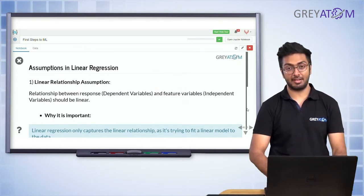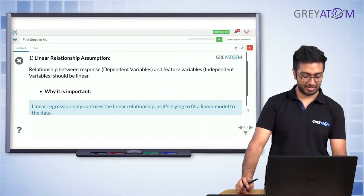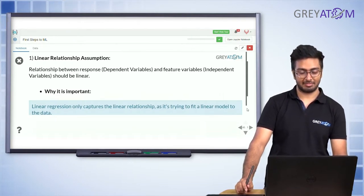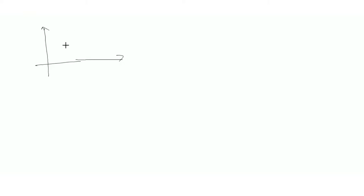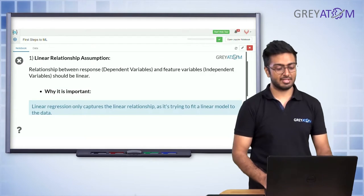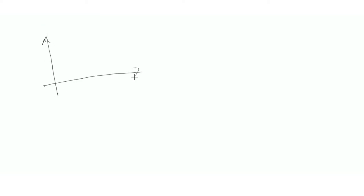The first assumption is the linear relationship assumption — the relationship between the response and the feature variables should be linear. This is important to understand: what does linear regression actually mean? This assumption says there must be a linear relationship between the independent variables and the dependent variable you're trying to predict.